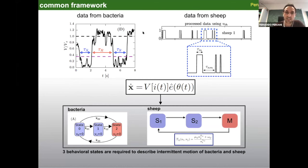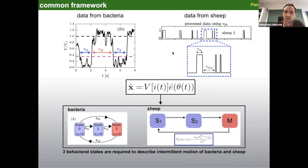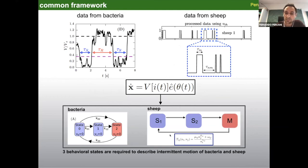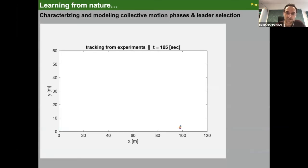I hope I have convinced you that we look at bacteria and sheep in a very similar way. We look at the speed as a function of time, use a threshold to define two phases — moving and non-moving — and in both systems we found three behavioral states. We use that to establish a Markov chain that we embed in an equation of motion describing how individuals move in space. One important difference: in sheep, the transition rates depend on the state of neighboring individuals.